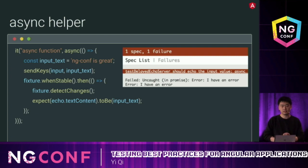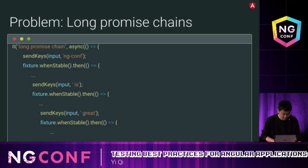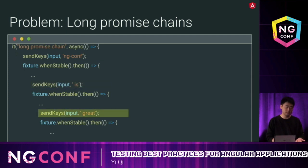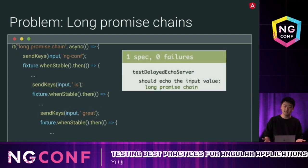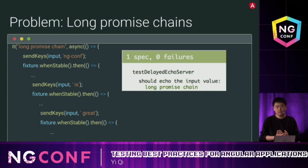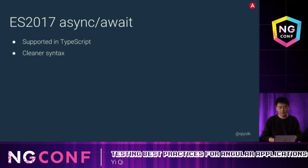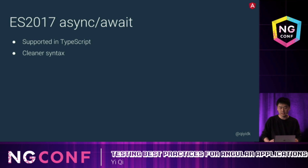But is there any problem with this? What if we have several steps? Say we send keys with some comment, then send more keys, and then more again — the test still passes, but the code already looks messy with just three send-keys calls. The good news is we have async/await now, supported in TypeScript. It provides the functionality of promise chaining with a much cleaner syntax.